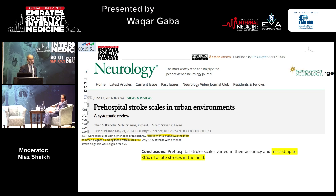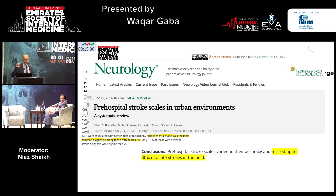I'm going to switch gears now. For those interested in stroke mimics, I have a lecture on YouTube available. We're now going to focus more on stroke chameleons — looks like it's not a stroke, but actually it is. Data from pre-hospital stroke scales shows that altered mental status was the most common diagnosis among missed acute ischemic strokes, and they missed up to 30% of acute strokes in the field.